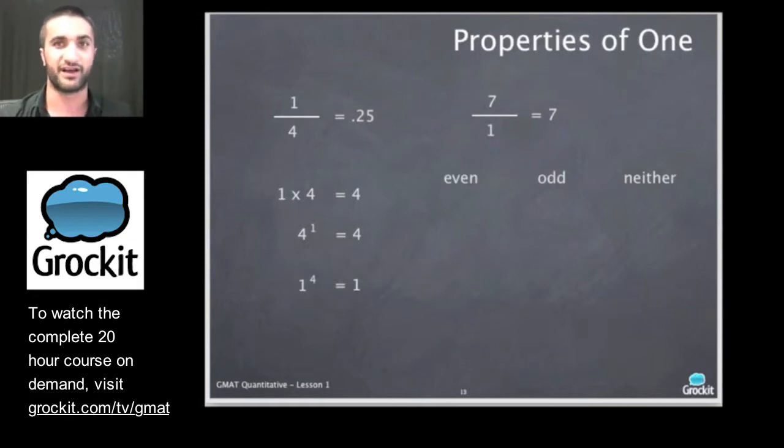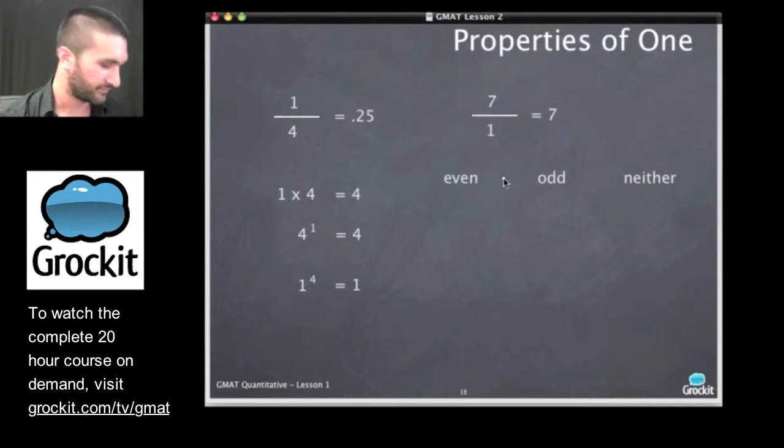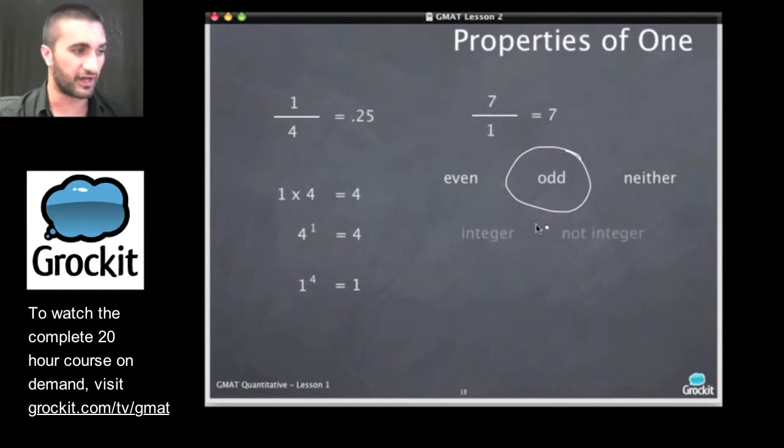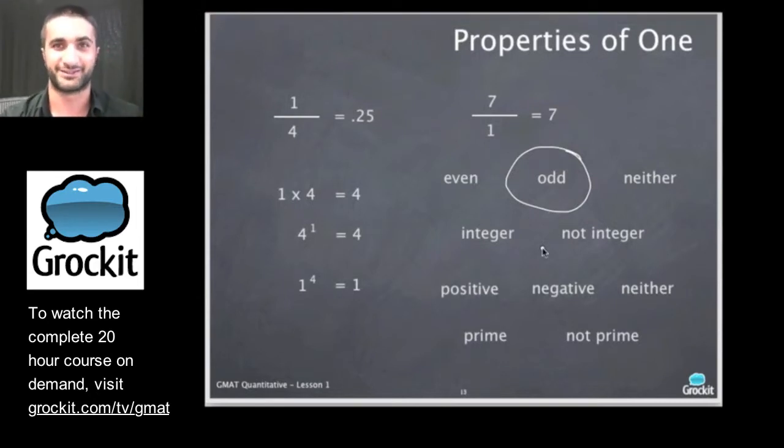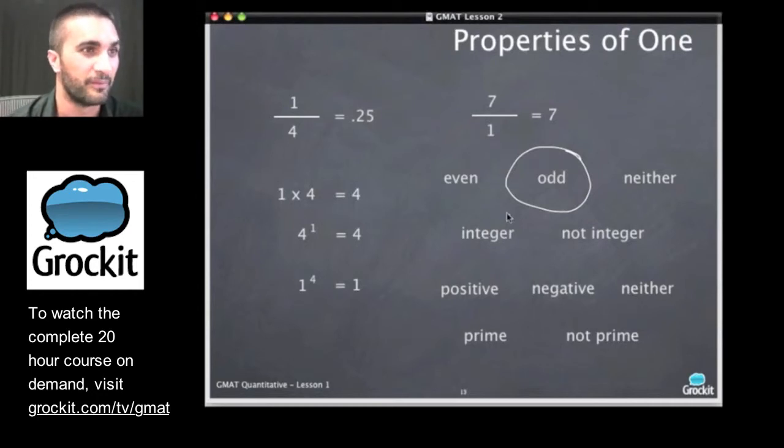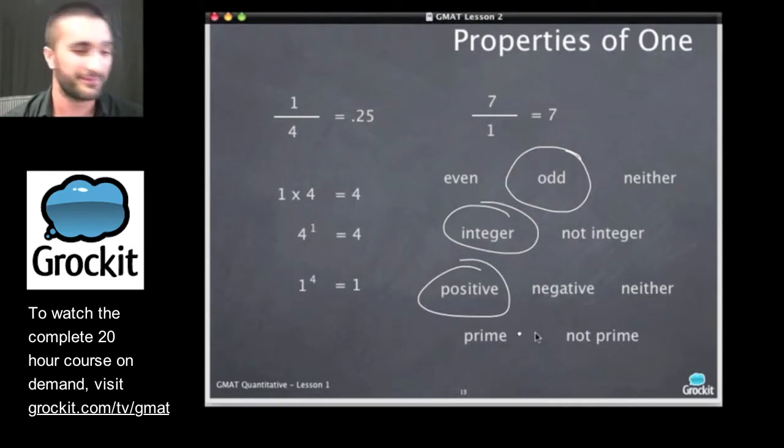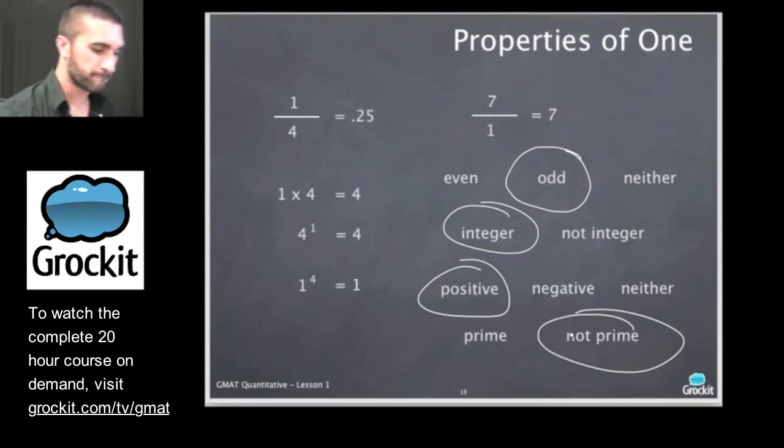How about even, odd, or neither? Properties of 1. Is 1 even, odd, or neither? This one shouldn't be too tricky. It's an odd number. 1 is an odd number. Is it an integer or not an integer? Is it positive, negative, or neither? And is it prime or not prime? We gave away one of these answers just a couple minutes ago. So it's an integer. It is positive. Negative 1 is negative. And it is not a prime number.